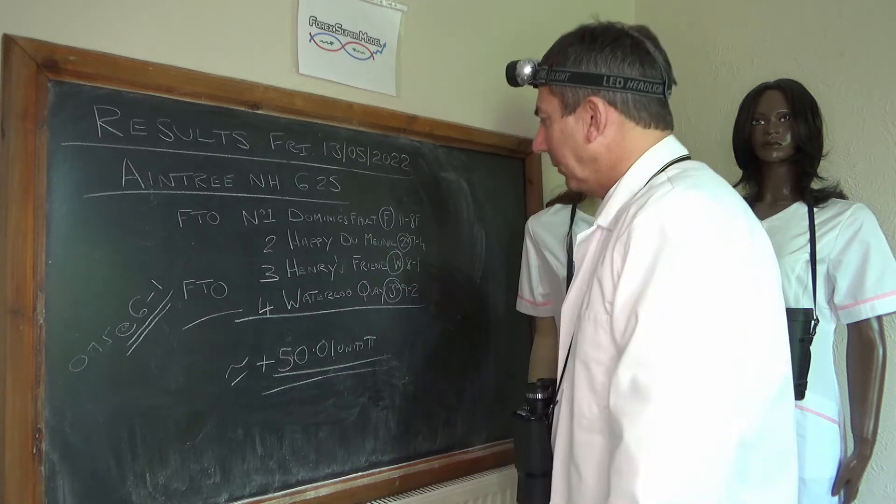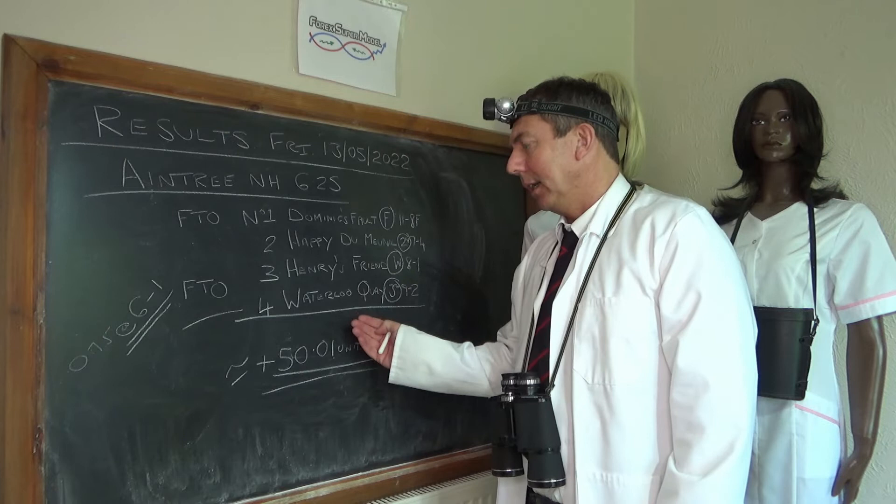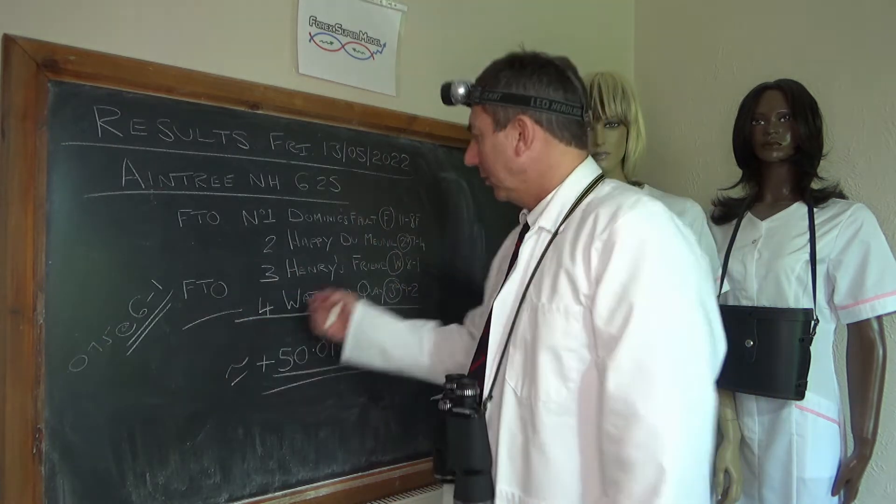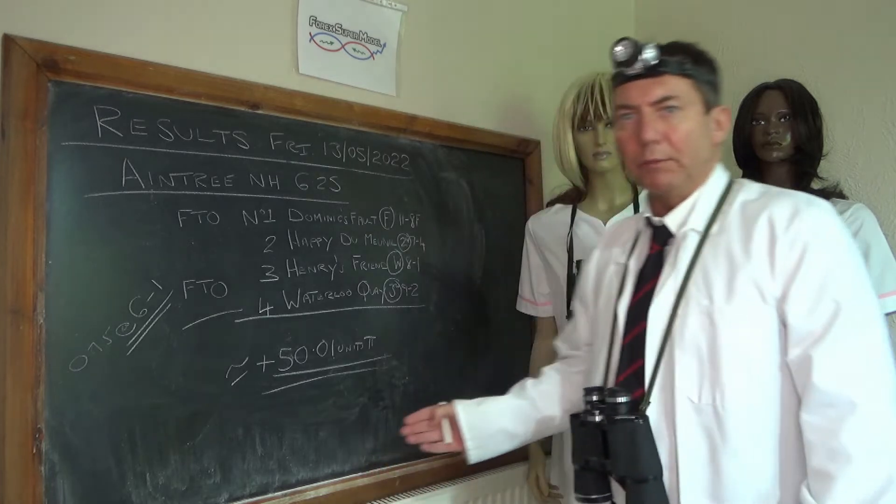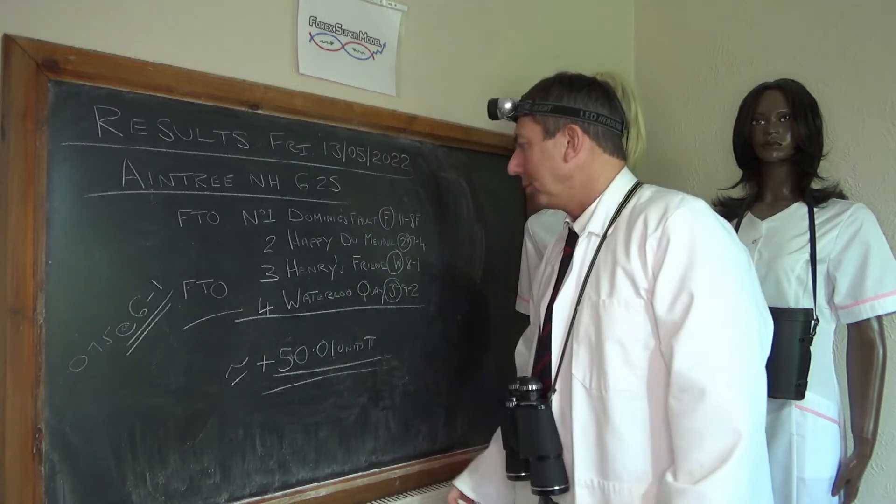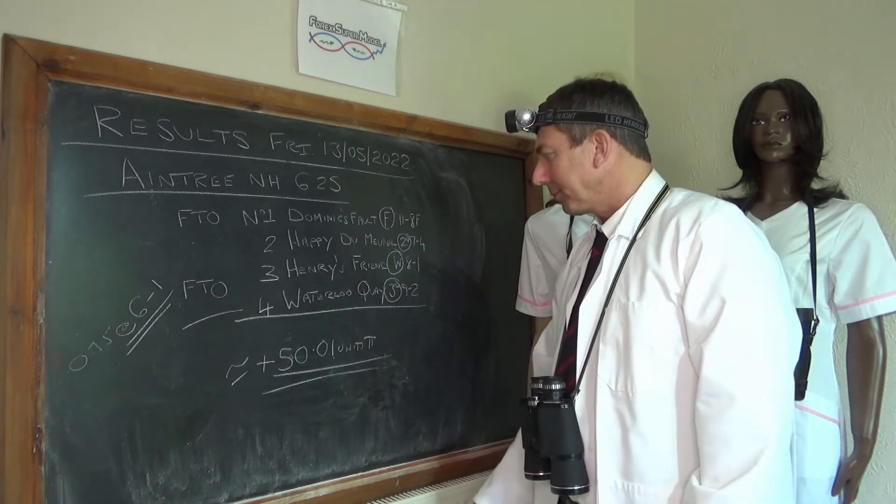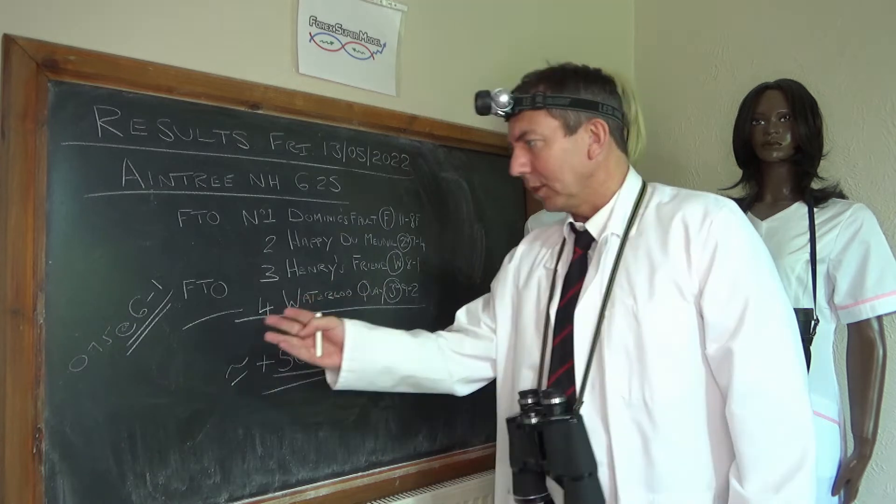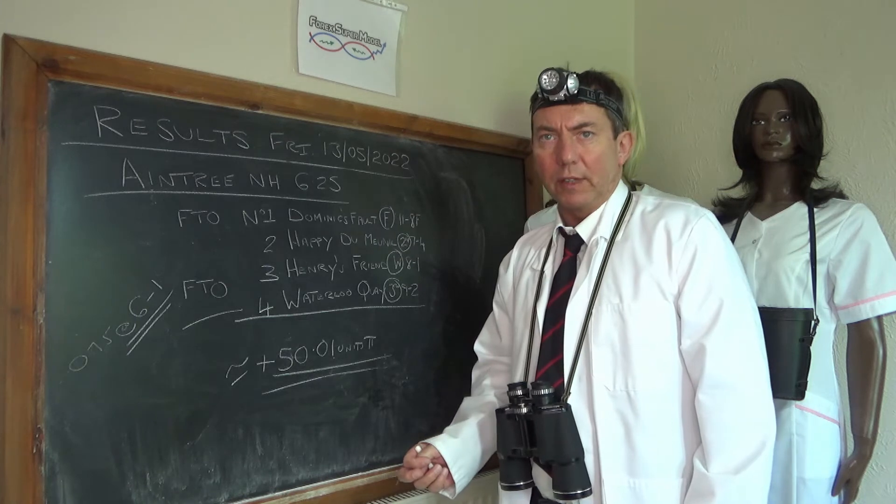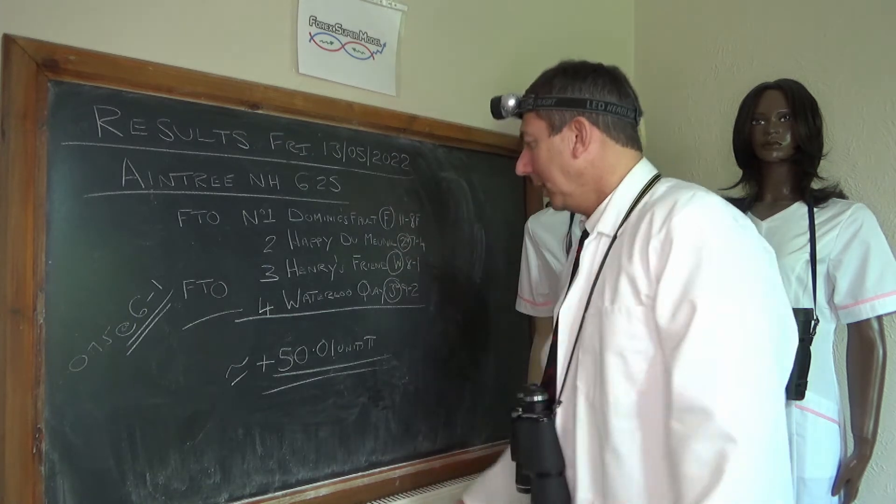Like complete chumps we basically loaded in on Waterloo Key at 0.75 of a unit, and if we'd only just had a quarter of a unit on this Henry's Friend it would have been great in hindsight. End result, Henry's Friend which we didn't particularly like came in at eight to one, so we lost a lot. We were on this Waterloo Key which was running with a flat tire.